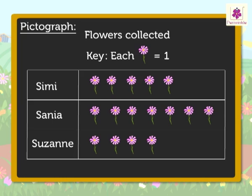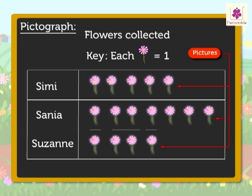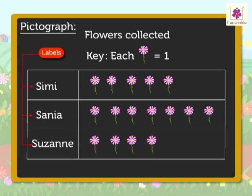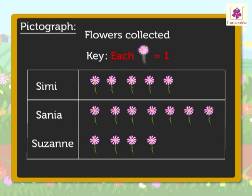Every pictograph has: 1. A title, which tells us what the pictograph is about. 2. Pictures, which tell us the given number of objects. 3. Labels, which tell us what kind of data is shown. 4. The key, which tells us the number each picture is equal to.